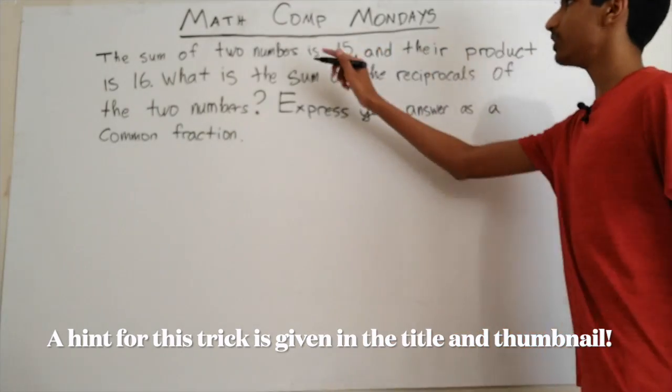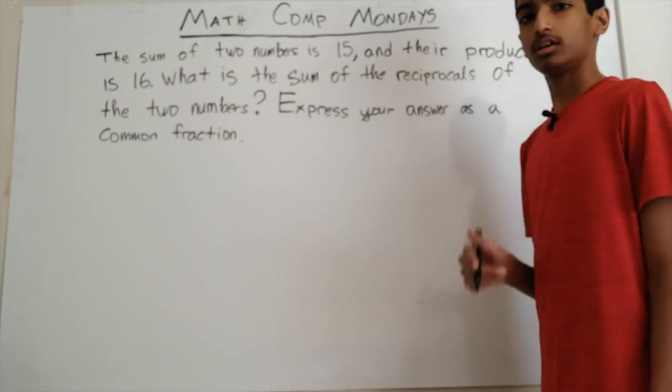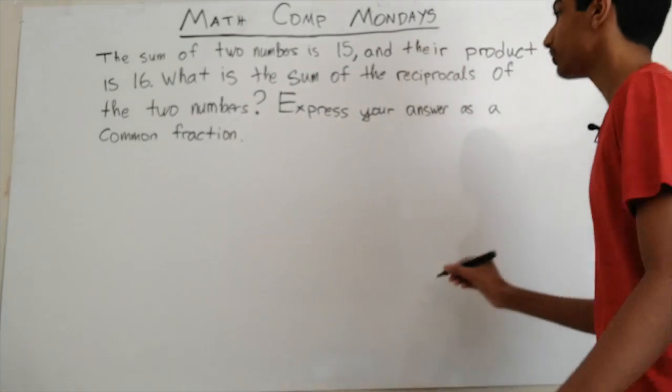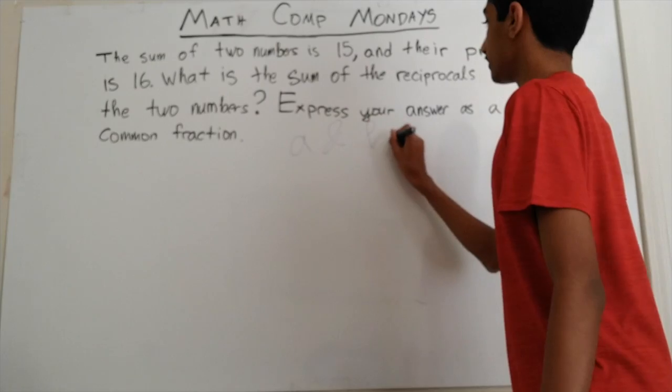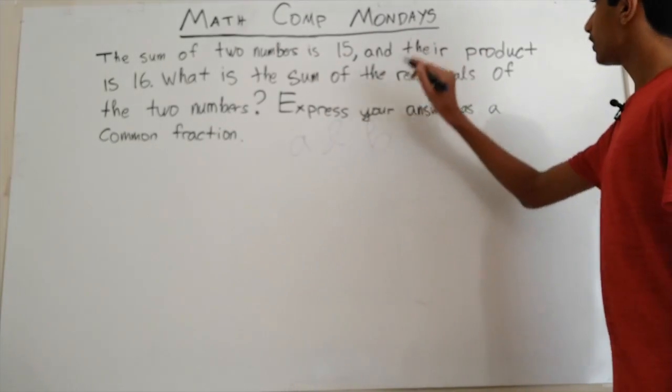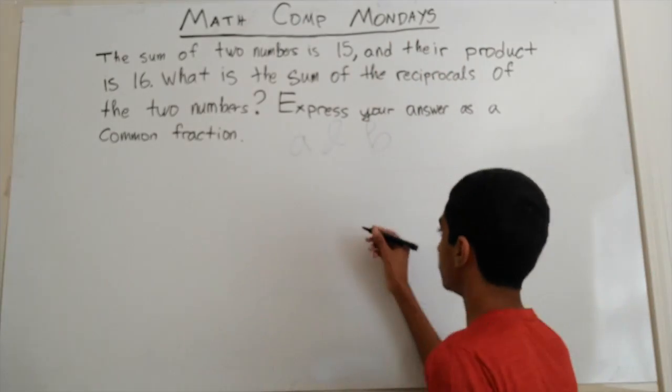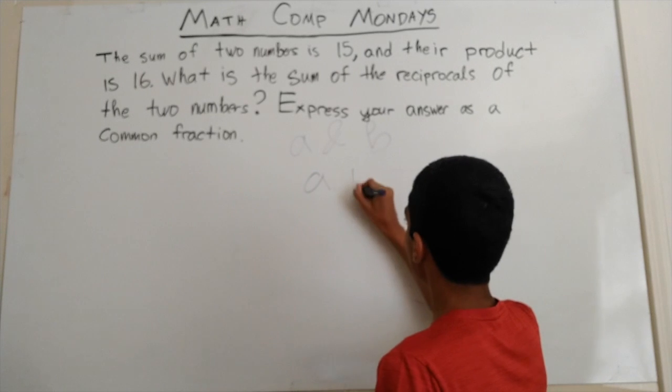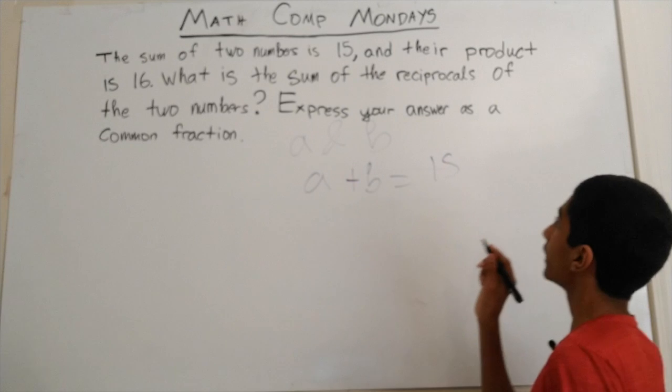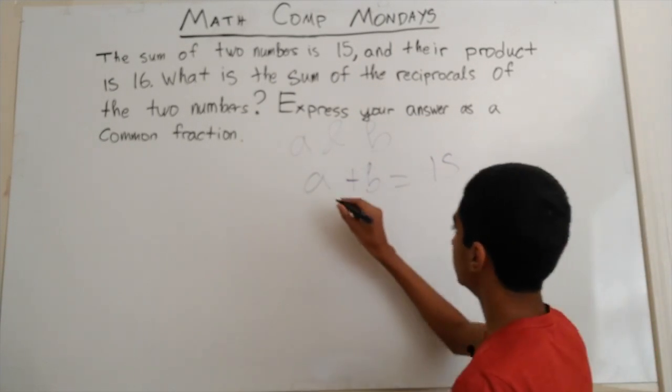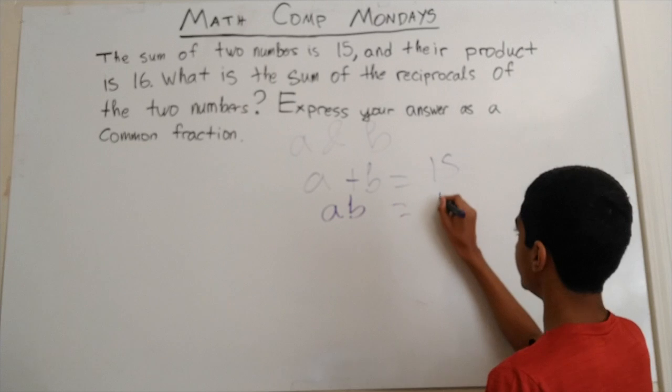The sum of two numbers is 15 and their product is 16. So we have two numbers here. Let's call those two numbers A and B. So the sum of those two numbers is 15. So A plus B equals 15. And their product is 16, so AB equals 16.